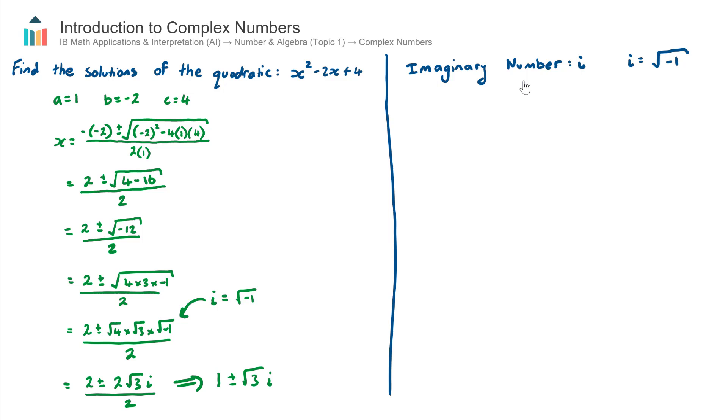...irrational numbers, and this is actually the last part of that now: imaginary numbers i. And this allows us to deal with the square root of negative numbers where i is defined as the square root of -1.